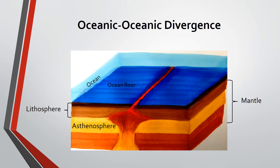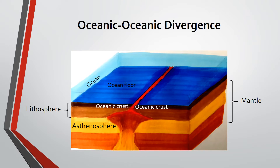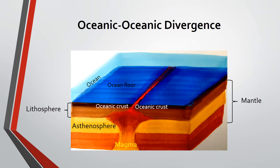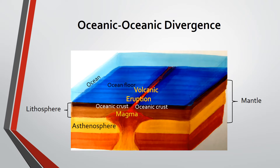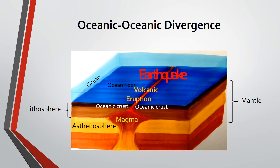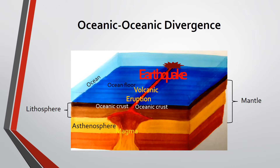Divergence of plates usually happens on oceanic crustal plates. Tensional forces caused by the rising magma from the mantle trigger the oceanic crust to be uplifted. Rifting follows, which produces deep fissures on the crust. Upwelling magma causes these features to erupt in the middle, and shallow earthquakes occur. Expelled lava immediately solidifies and forms a new crust. Because the crust is uplifted, an ocean ridge is formed.